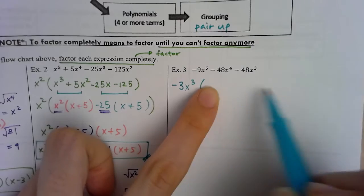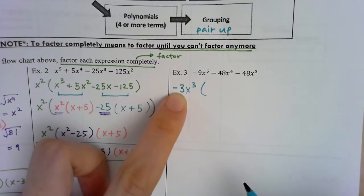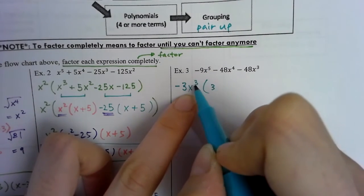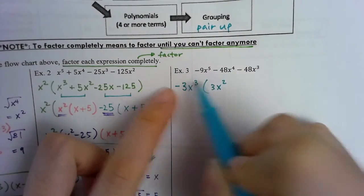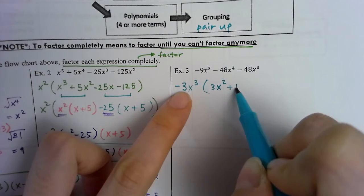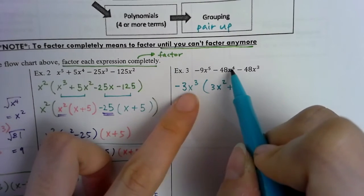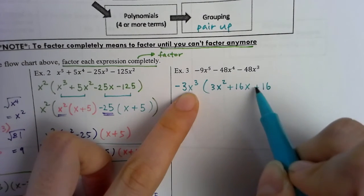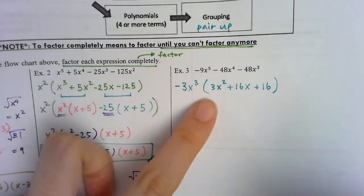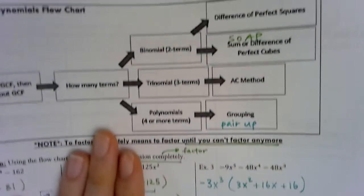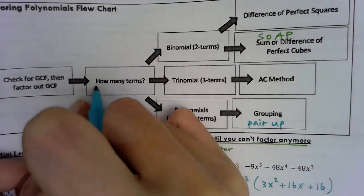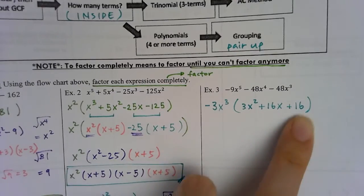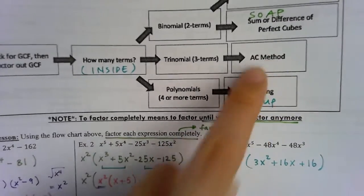Dividing: 9 divided by 3 is 3, with x to the fifth minus three x's leaving x squared. 48 divided by 3 is 16, with x to the fourth minus three x's leaving x. The last term: same coefficient factor, x cubed out of x cubed leaves no x. Inside the parentheses we have three terms, so we use the AC method.